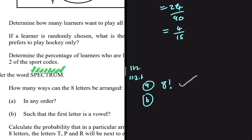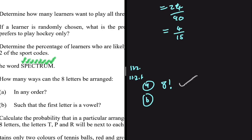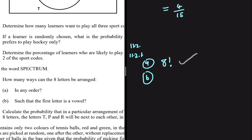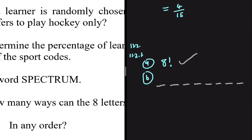For part b, we arrange the 8 letters such that the first letter is a vowel. We have 8 spots to fill and the first letter must be a vowel. The vowels in SPECTRUM are E and U, so there are 2 choices for the first spot. For the remaining 7 spots there is no restriction, so we have 7 letters left, then 6, then 5, and so on down to 1. This gives us 2 multiplied by 7 factorial.